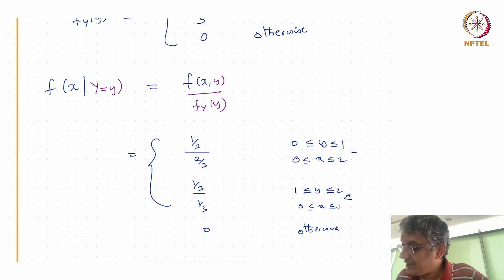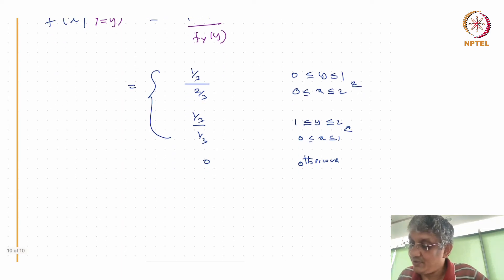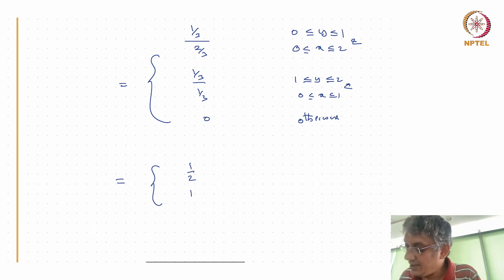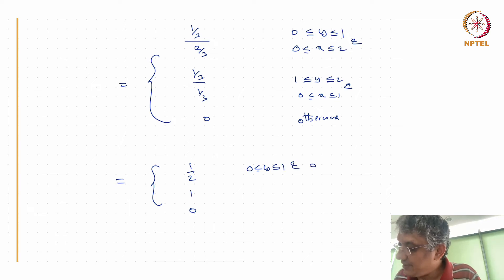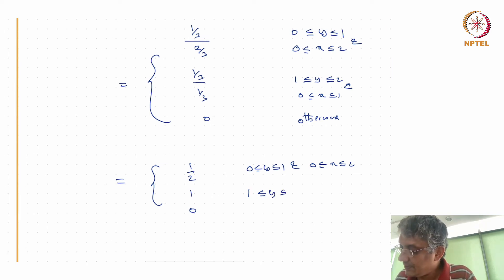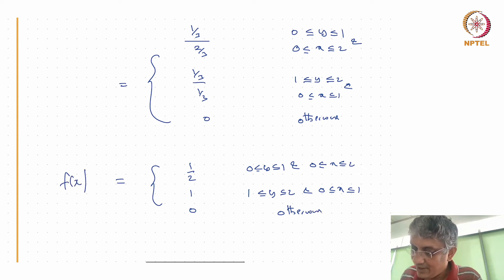So the conditional density of X given Y = y has three cases: 1/2 when y is between 0 and 1 and x is between 0 and 2; 1 when y is between 1 and 2 and x is between 0 and 1; and 0 otherwise.